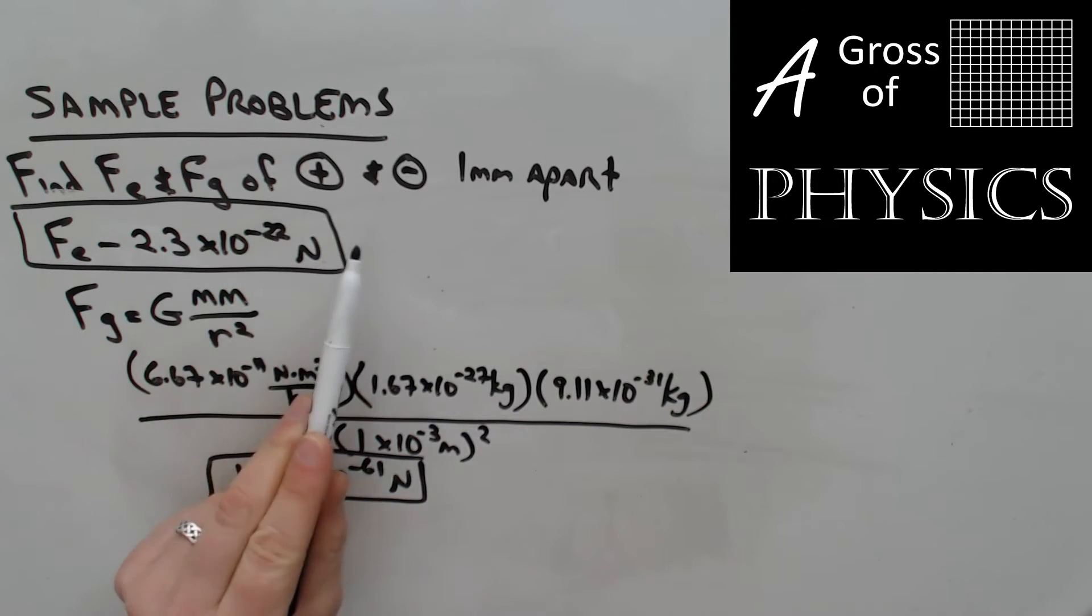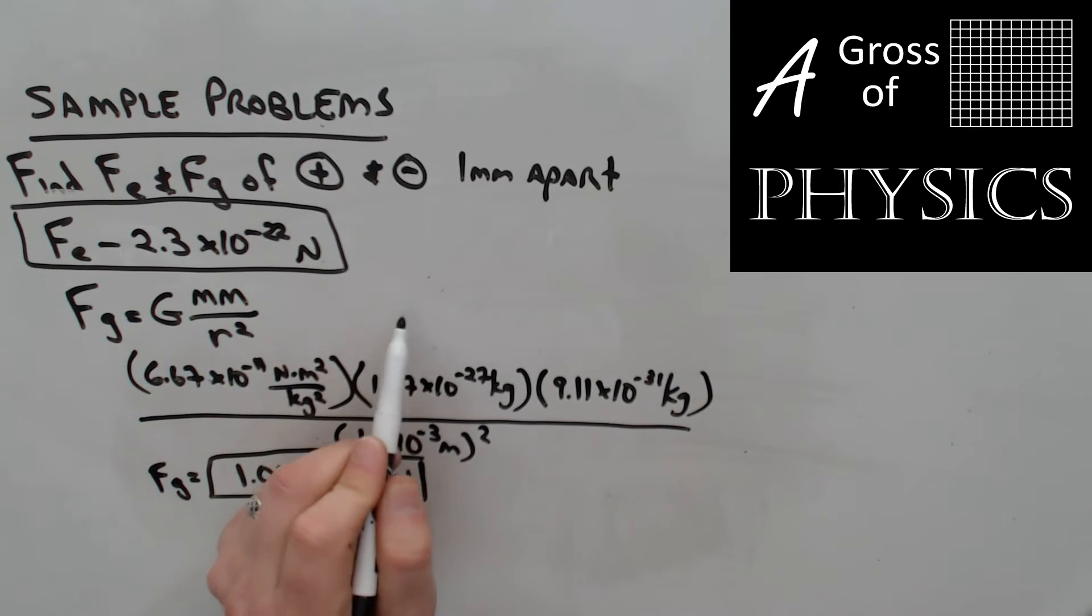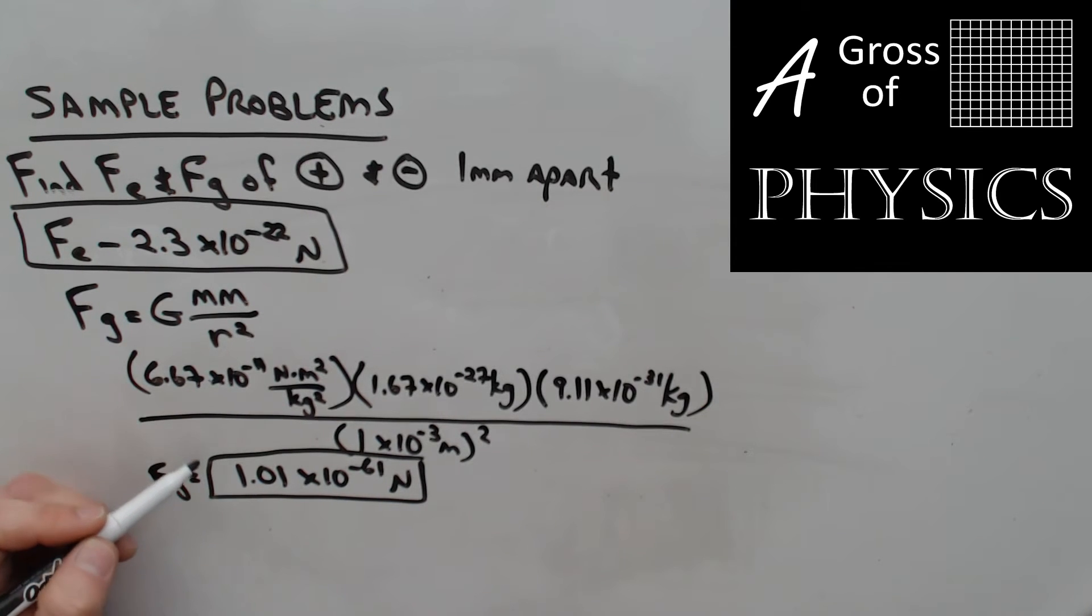When we're dealing with objects of this kind of charge, this close apart, their gravitational force of attraction is negligible. Negative 61 minus 22 in terms of the order of magnitude - there's a difference of 39 zeros between these two. So the gravitational force of attraction between a proton and electron is much smaller than the electrostatic force.